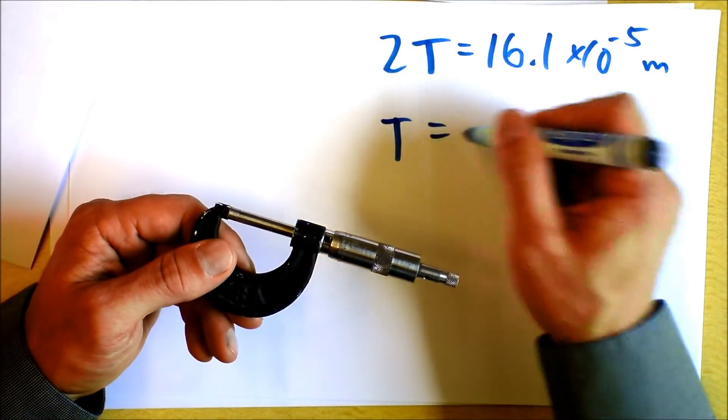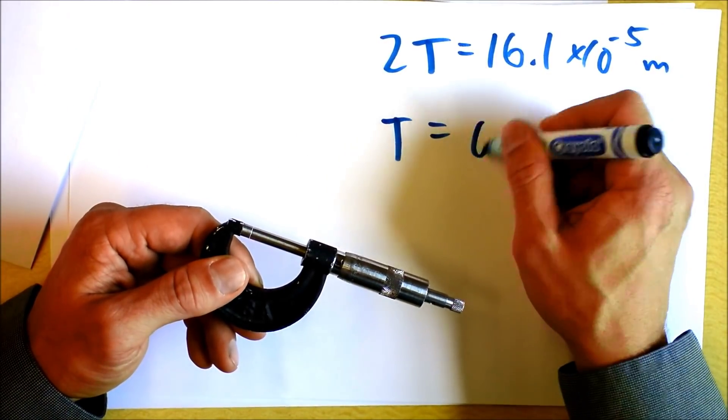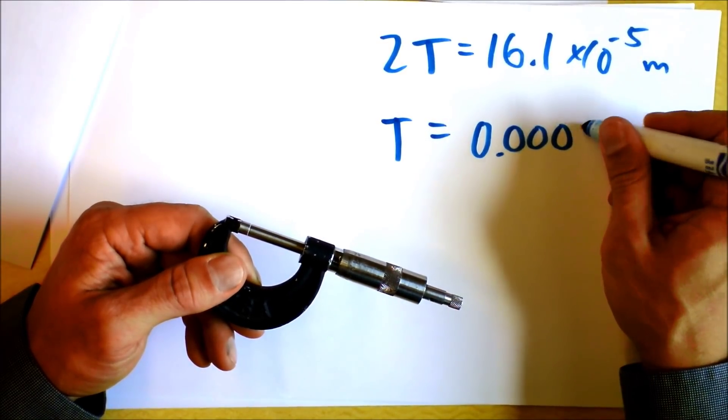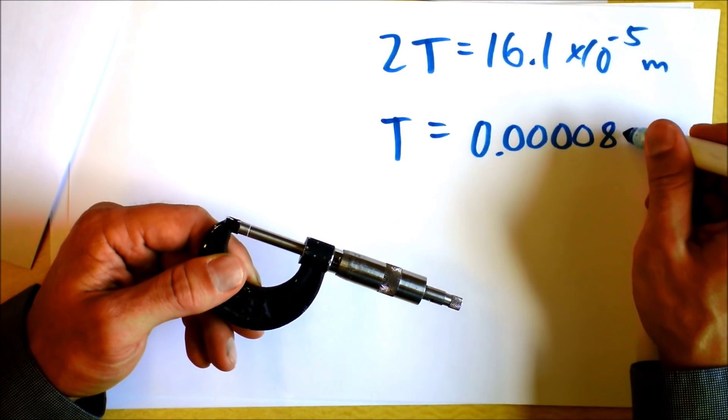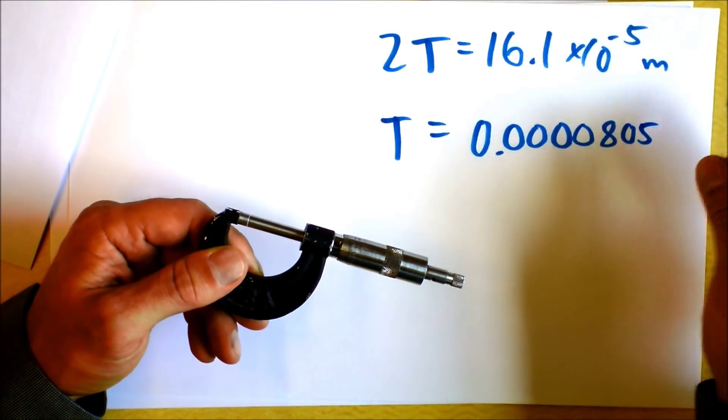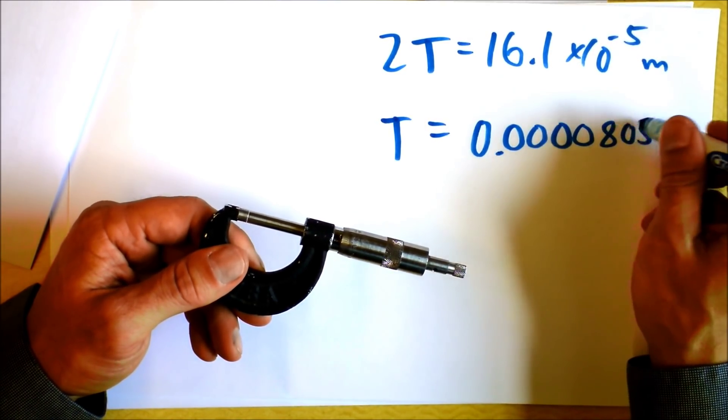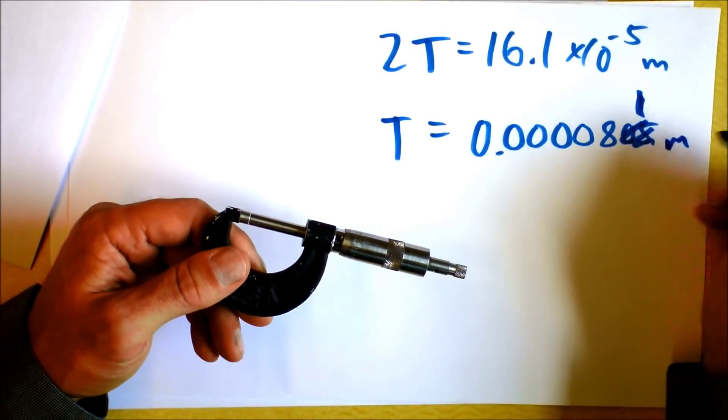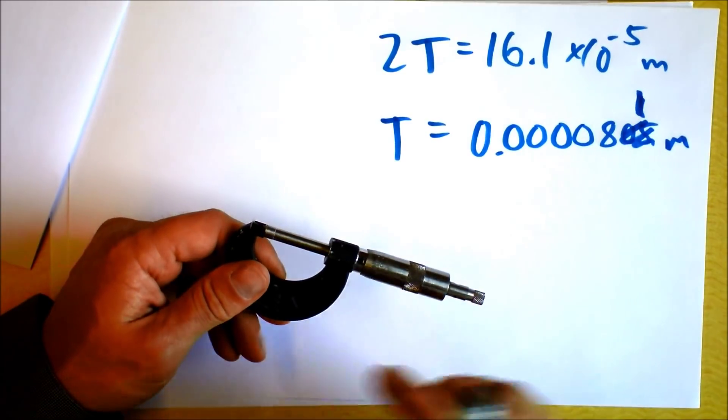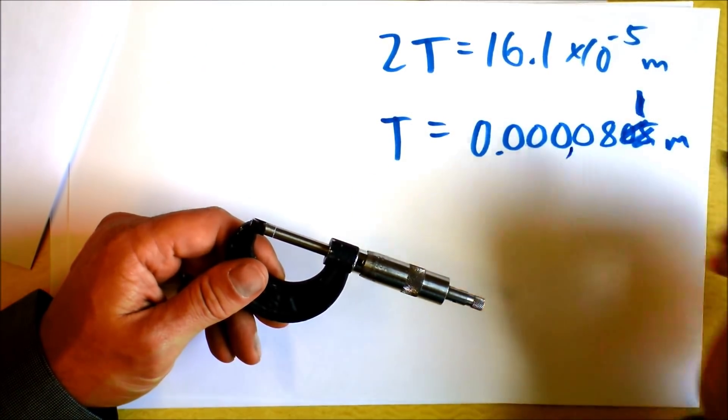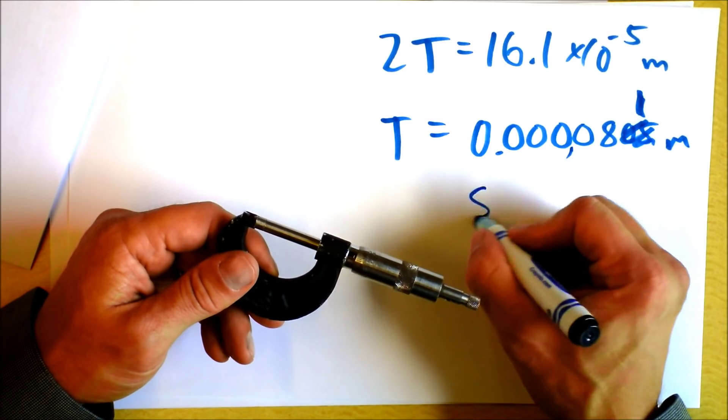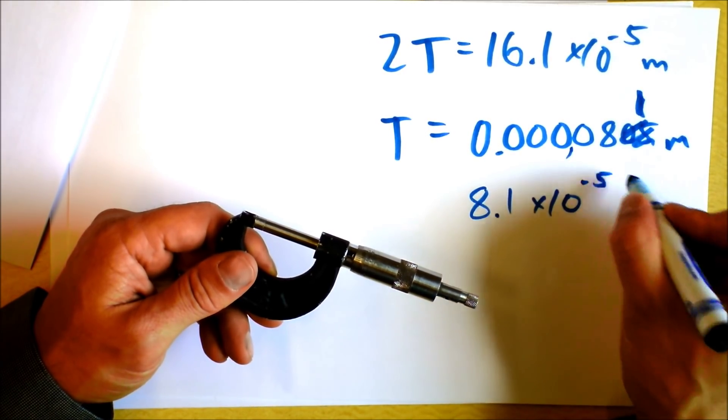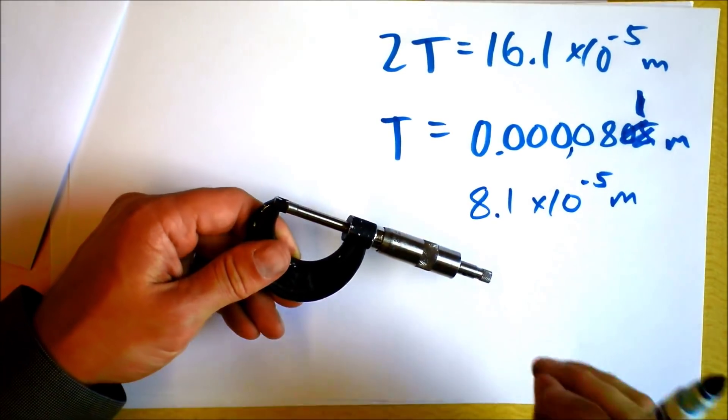So one thickness is 0.0000805. This is probably a little bit rough saying that's an actual digit. Anyway, we're about that many meters. I'm going to put a little comma there or something. Anyway, it's 8.1 maybe times 10 to the negative fifth meters thick. That's one piece of paper's thickness.